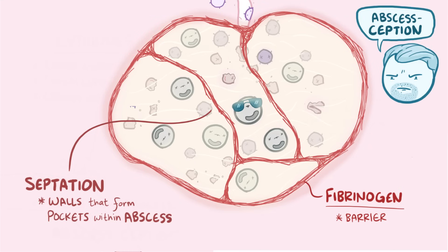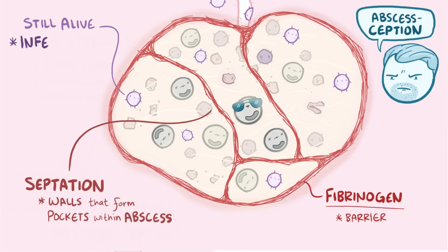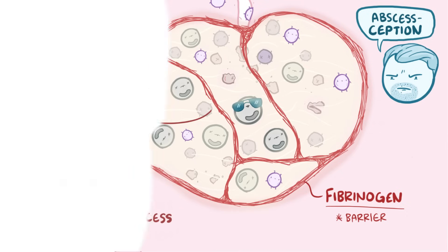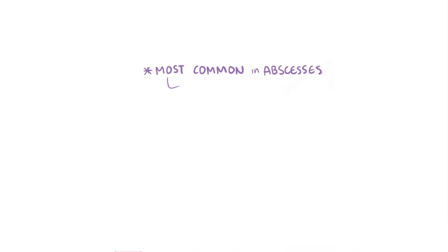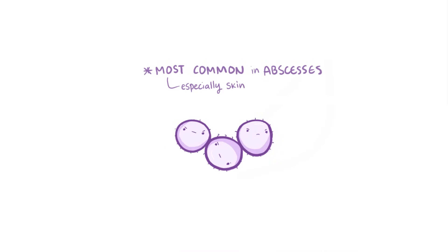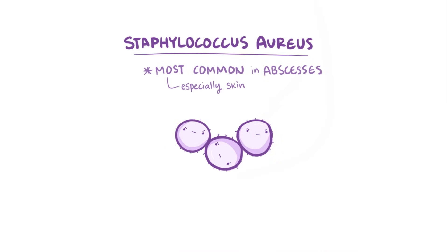Even though the pus is largely dead material, there are still plenty of live bacteria within the pus, which makes it highly infectious if it gets spread from one place to another. One of the most common bacteria found in abscesses, especially in the skin or underlying soft tissue, is Staphylococcus aureus. In fact, Staphylococcus aureus releases the enzyme coagulase, which helps speed up the process of building the fibrinogen wall.